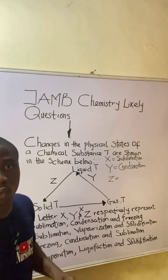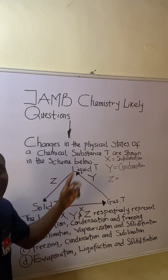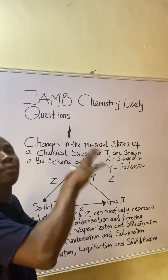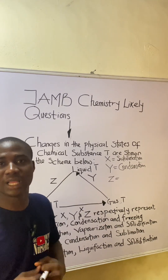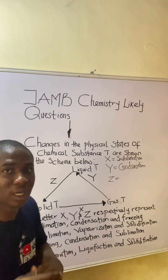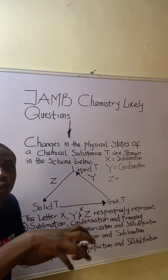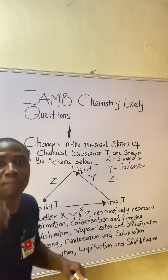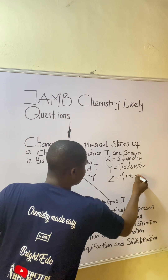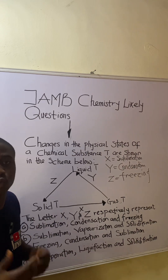Now let's talk about Z. This was liquid before it later changed to solid. For example, if you have water in a container and keep it in the fridge, that water changes to become solid. The process whereby a liquid changes to become solid is simply called freezing. So Z represents freezing.